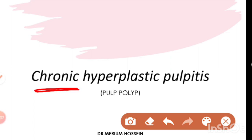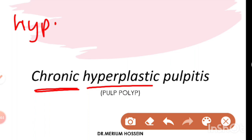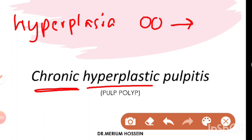The second word is 'hyperplastic.' In hyperplasia there is going to be an increase in the number of cells. For example, in normal tissue there are two cells, so after the hyperplastic change there are going to be more than two cells.